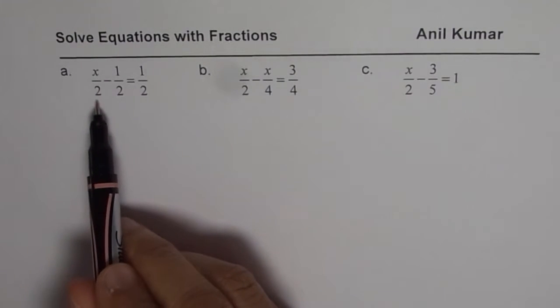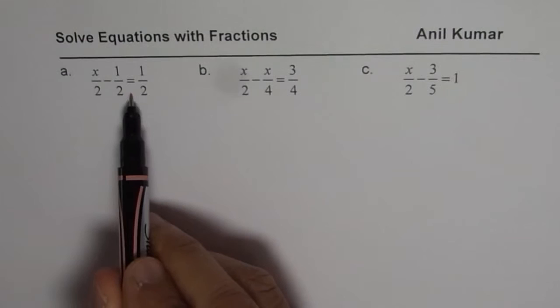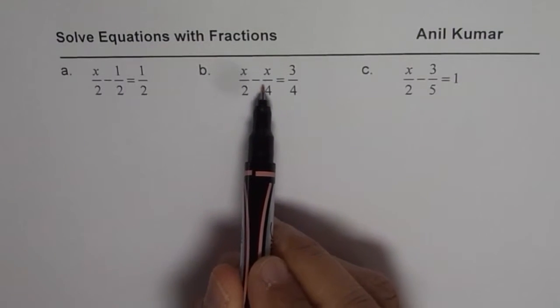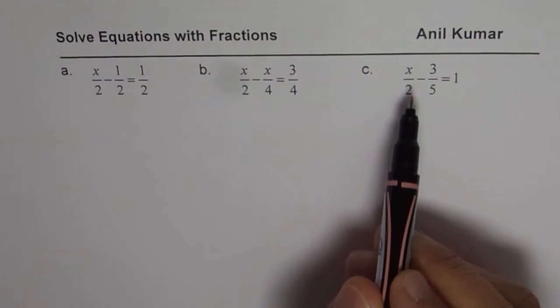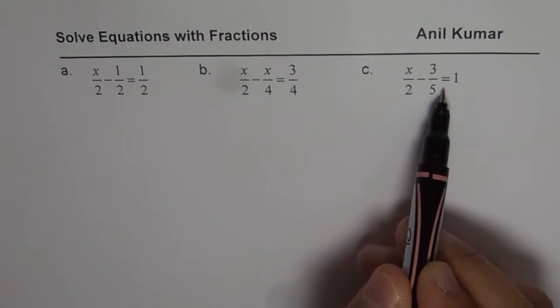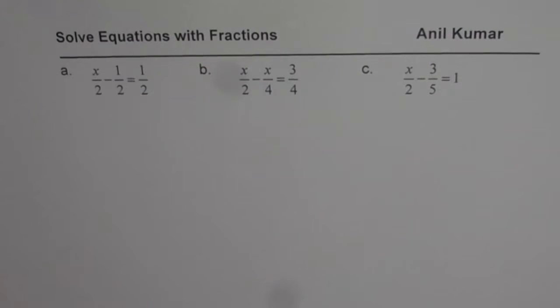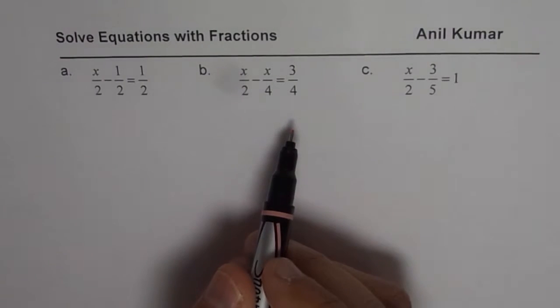The first one is x over 2 minus half equals to half. B is x over 2 minus x over 4 equals to 3 over 4. And C is x over 2 minus 3 over 5 equals to 1. So these questions are similar with slight differences.